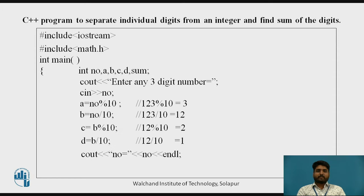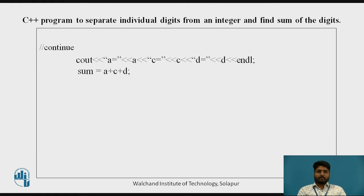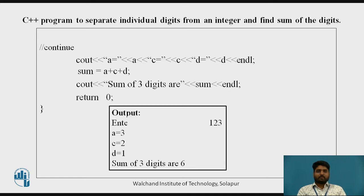Now cout displays the number. A, C, and D are called and these are again summed. The equation is sum equal to A plus C plus D. So the sum of the three digits is stored in 'sum'. The output: if the user enters 123, A equals 3, C equals 2, D equals 1, and the sum of all three digits is 3 plus 2 plus 1, which comes to 6.